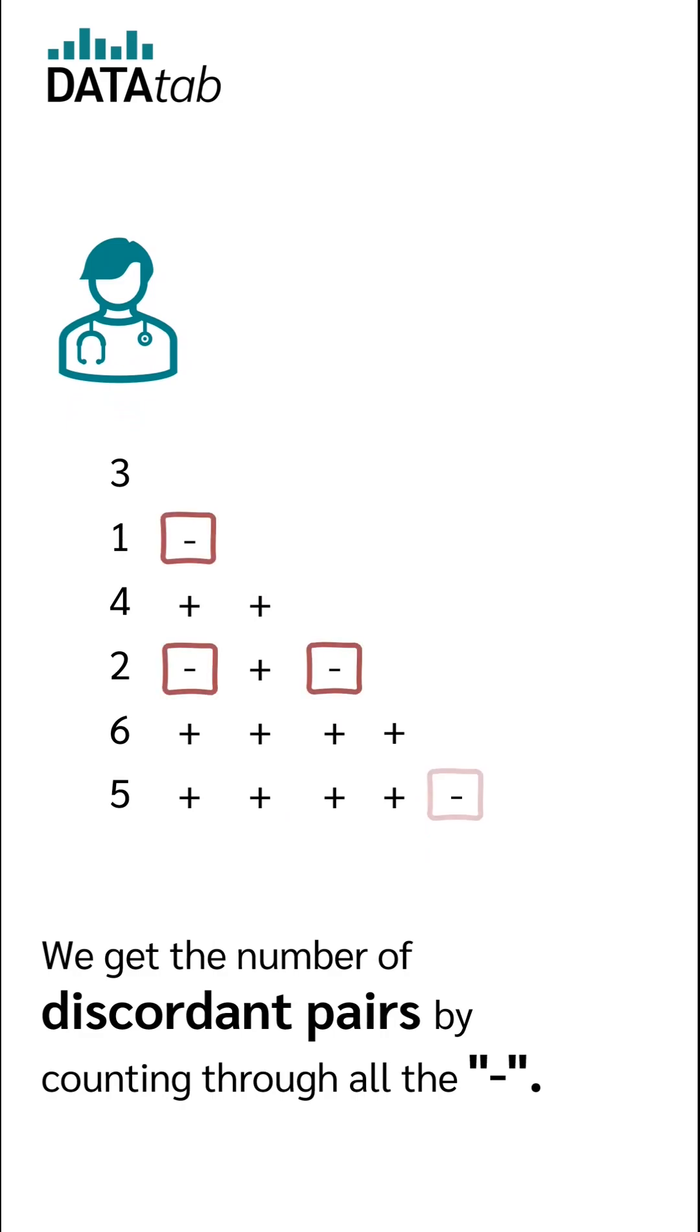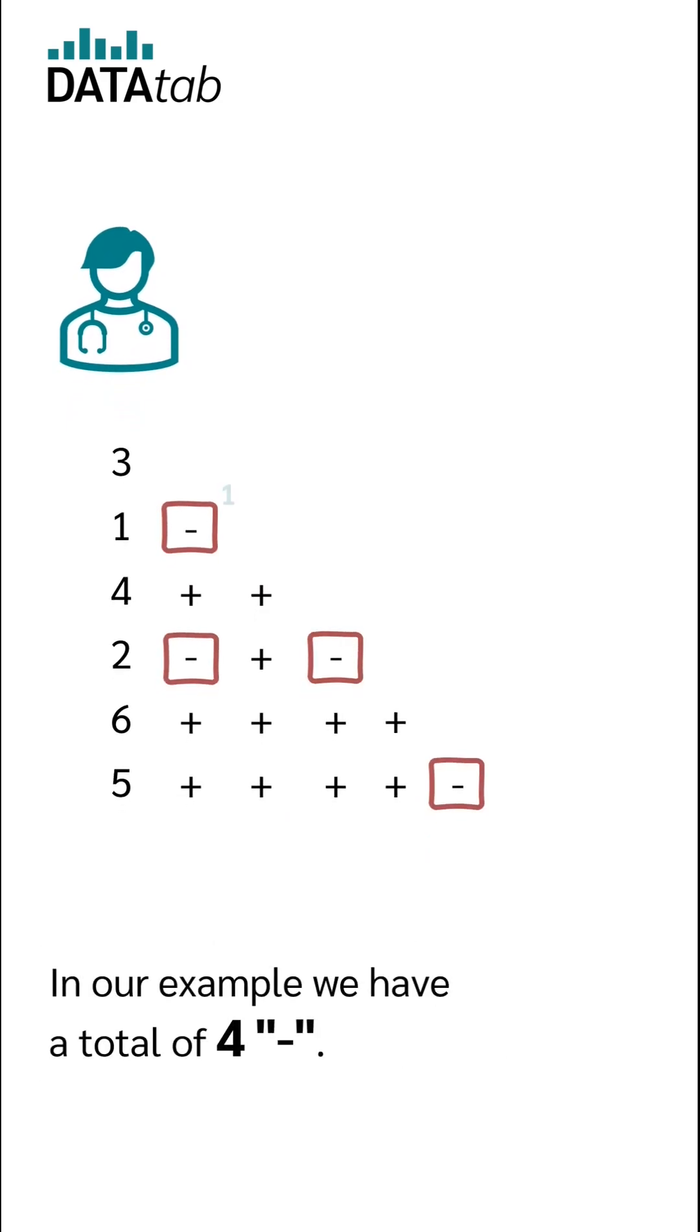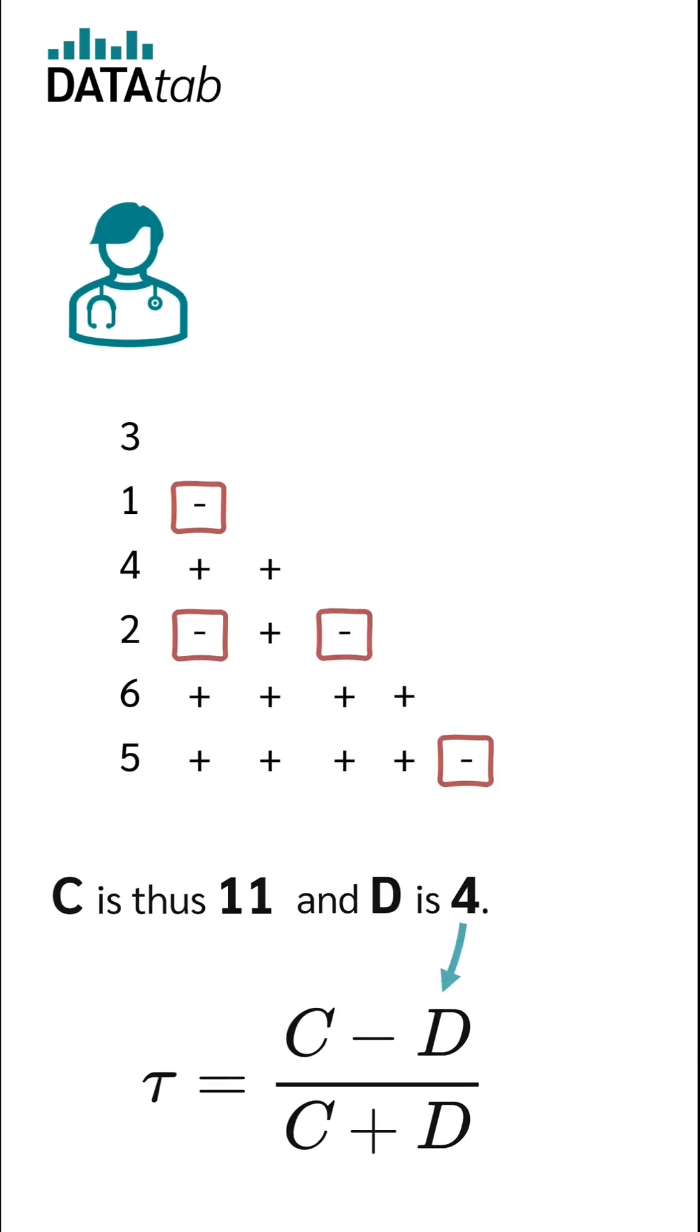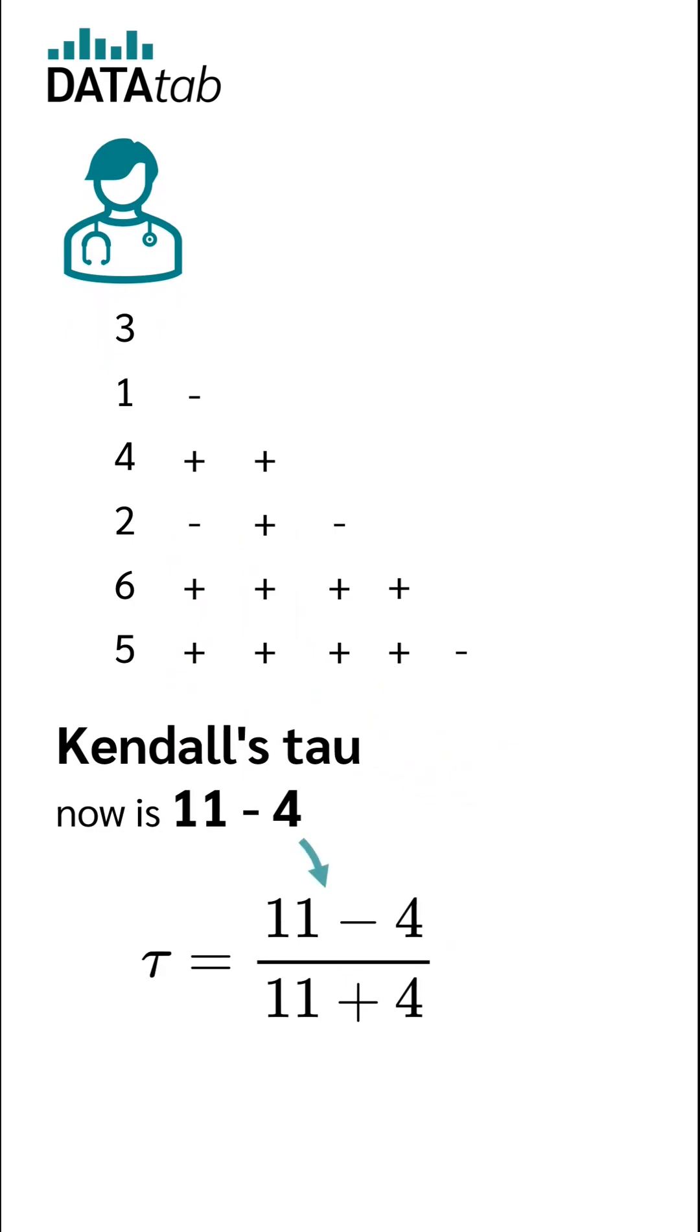We get the number of discordant pairs by counting all the minus. In our example, we have a total of 4 minus. C is thus 11 and D is 4. Kendall's tau now is 11 minus 4 divided by 11 plus 4.